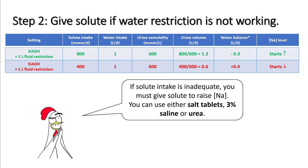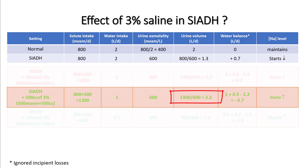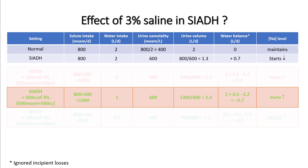Solute can be provided as salt tablets, 3% saline, or urea. With 500 cc of 3% saline, the patient receives 500 mOsm of solute plus 500 cc of water, bringing total solute intake to 1300 mOsm. At a urine osmolality of 600, he makes 2.2 liters of urine. Total intake is 1 liter oral plus 0.5 liters from 3% saline; subtracting 2.2 liters gives a negative 0.7 liter balance, and sodium slowly rises.